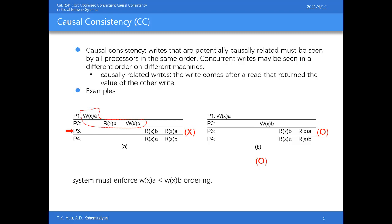Causal consistency defines that causally related write operations must be seen by all processes in the same order, but concurrent write operations may be seen in different orders on different machines. Two write operations are causally related if one write comes after a read that returned the value of the other write. In Figure A, the data store is not causally consistent: write operations in P1 and P2 are causally related because value B results from reading value A from variable X in P2, but P3 violates ordering by reading value A after reading value B.